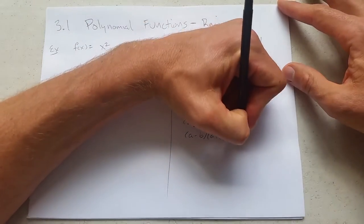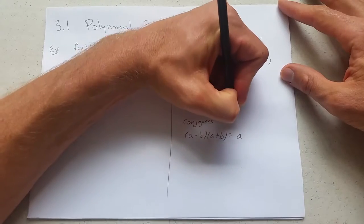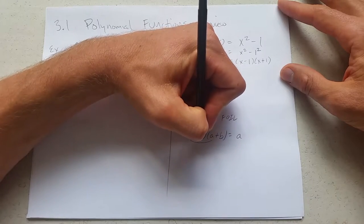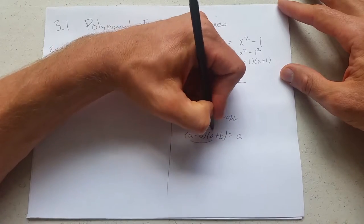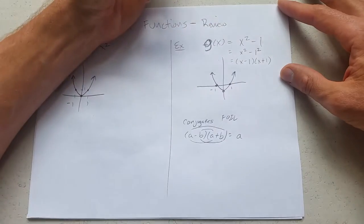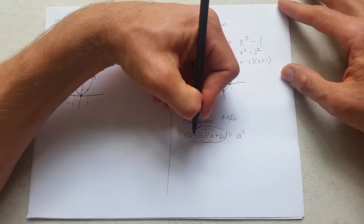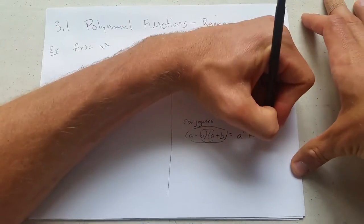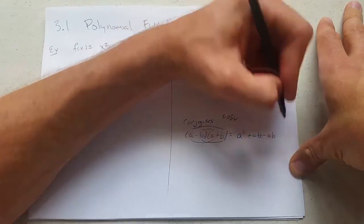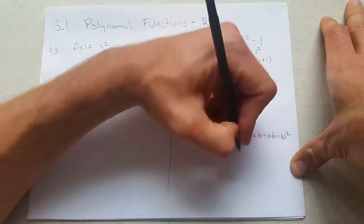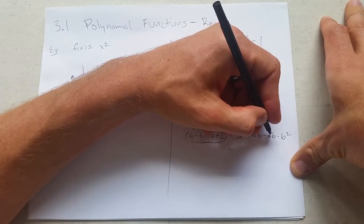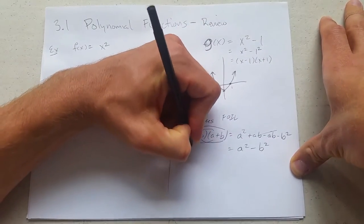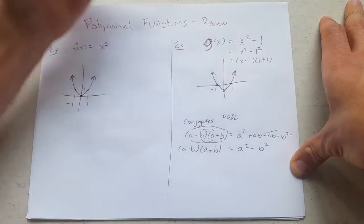What do you get when you multiply? I'm going to FOIL: first, outside, inside, last. We're just pairing things up, a times a is a squared. Now if we go outside, plus a b, inside minus b a, which is the same as minus a b, minus b times b is minus b squared. a b minus a b cancels: a squared minus b squared. This is known as difference of squares.